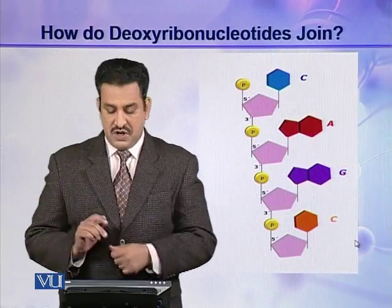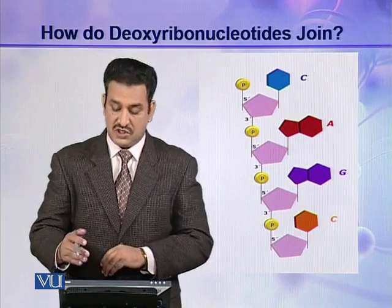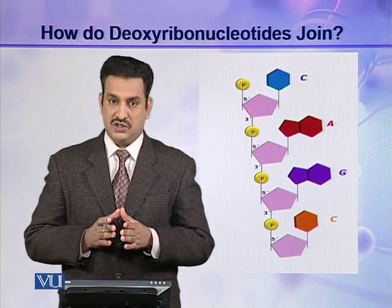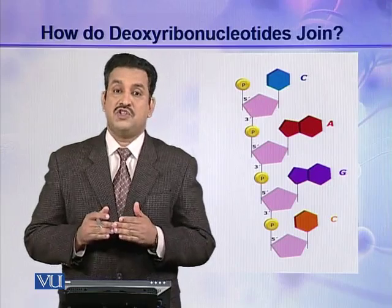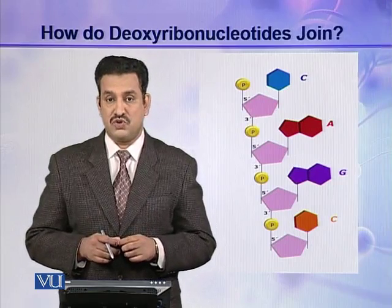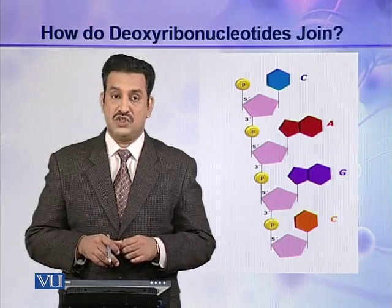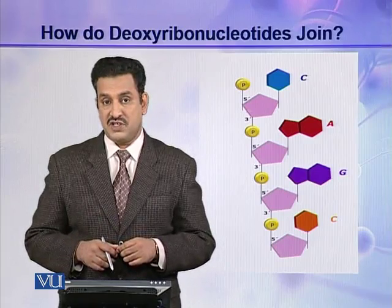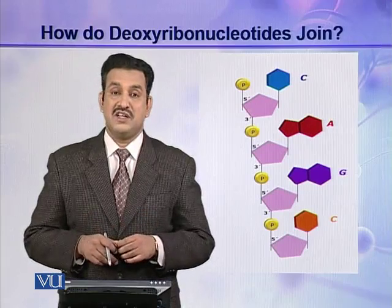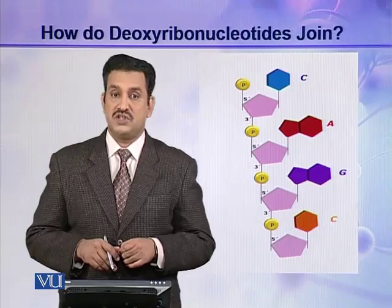Look at this picture — this is a polynucleotide chain where the nucleotides are linked together through phosphodiester linkage. If a chain contains 50 or fewer deoxyribonucleotides, it is called an oligonucleotide chain. If the chain contains more than 50 deoxyribonucleotides, it is called a polynucleotide chain. As you know, DNA is a polynucleotide chain, and in this way a polynucleotide chain is formed.